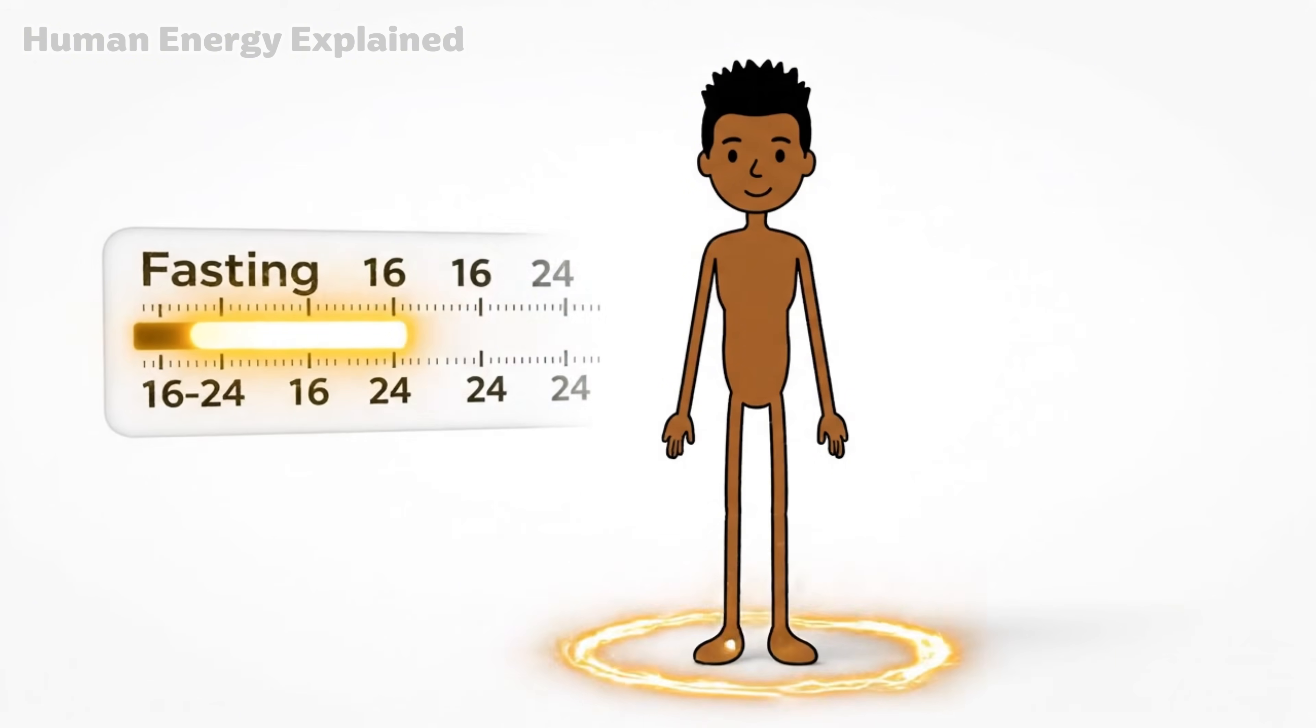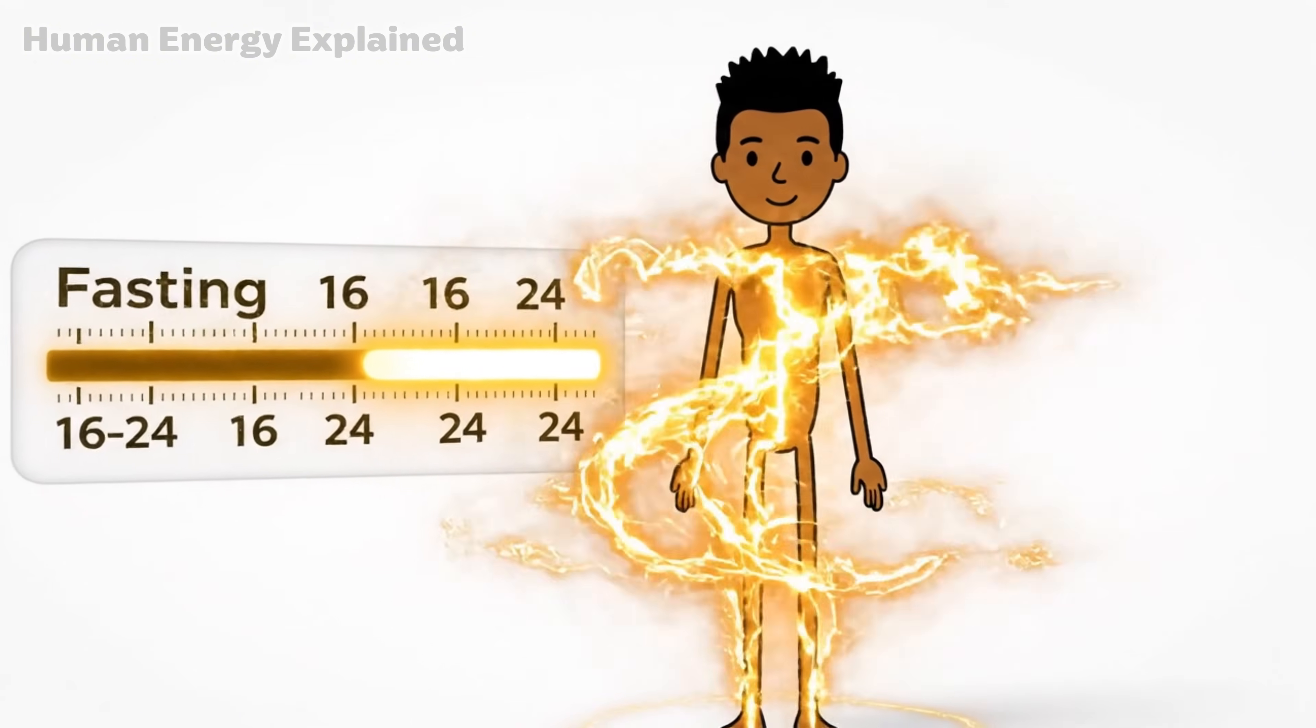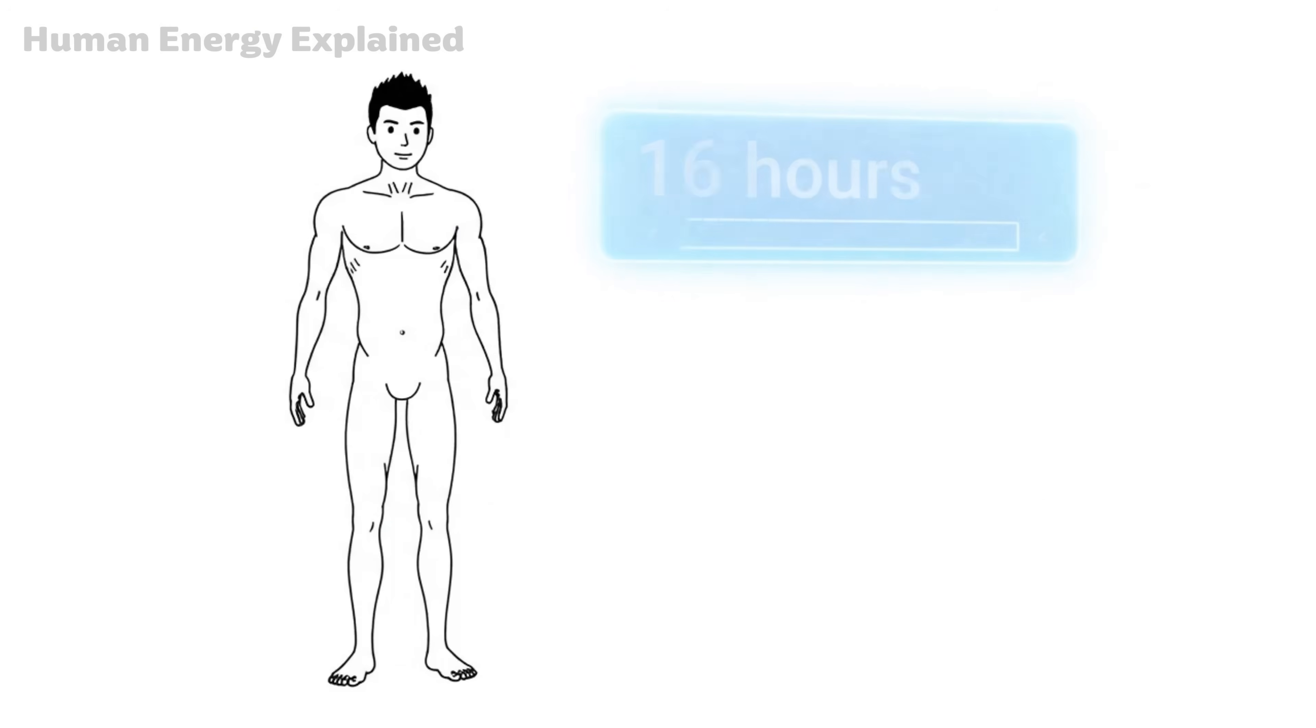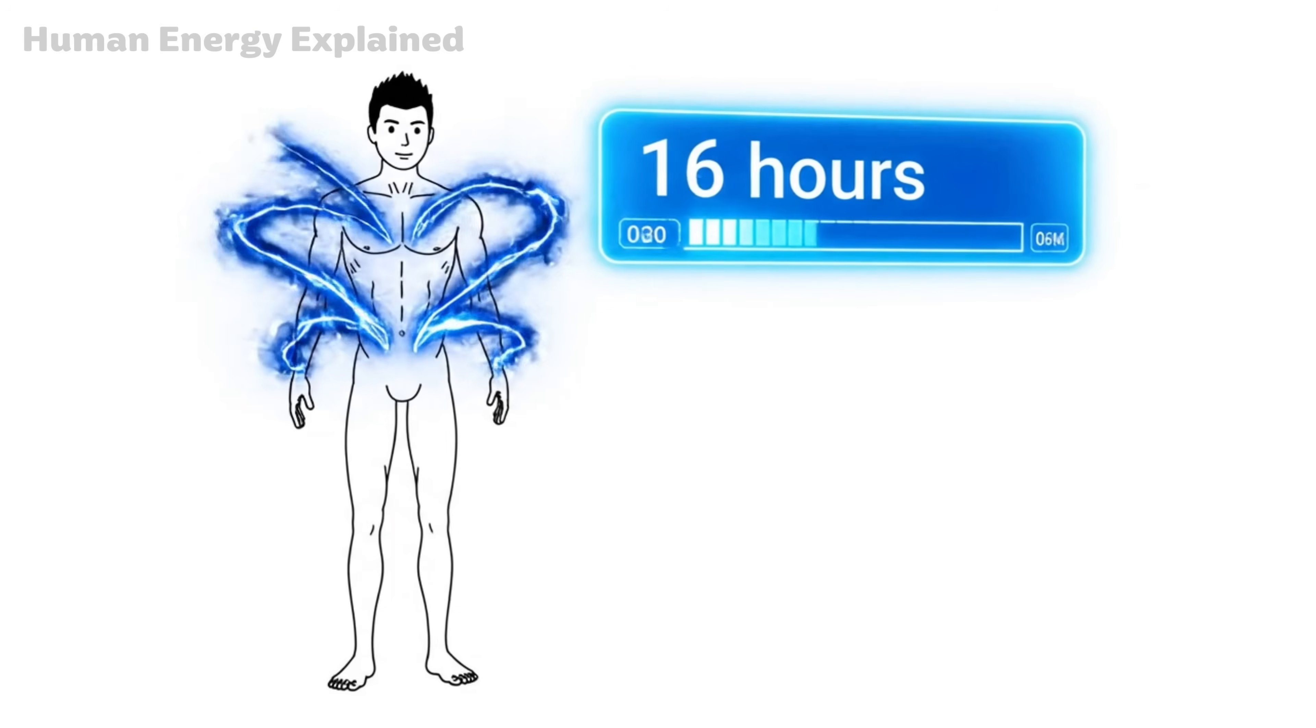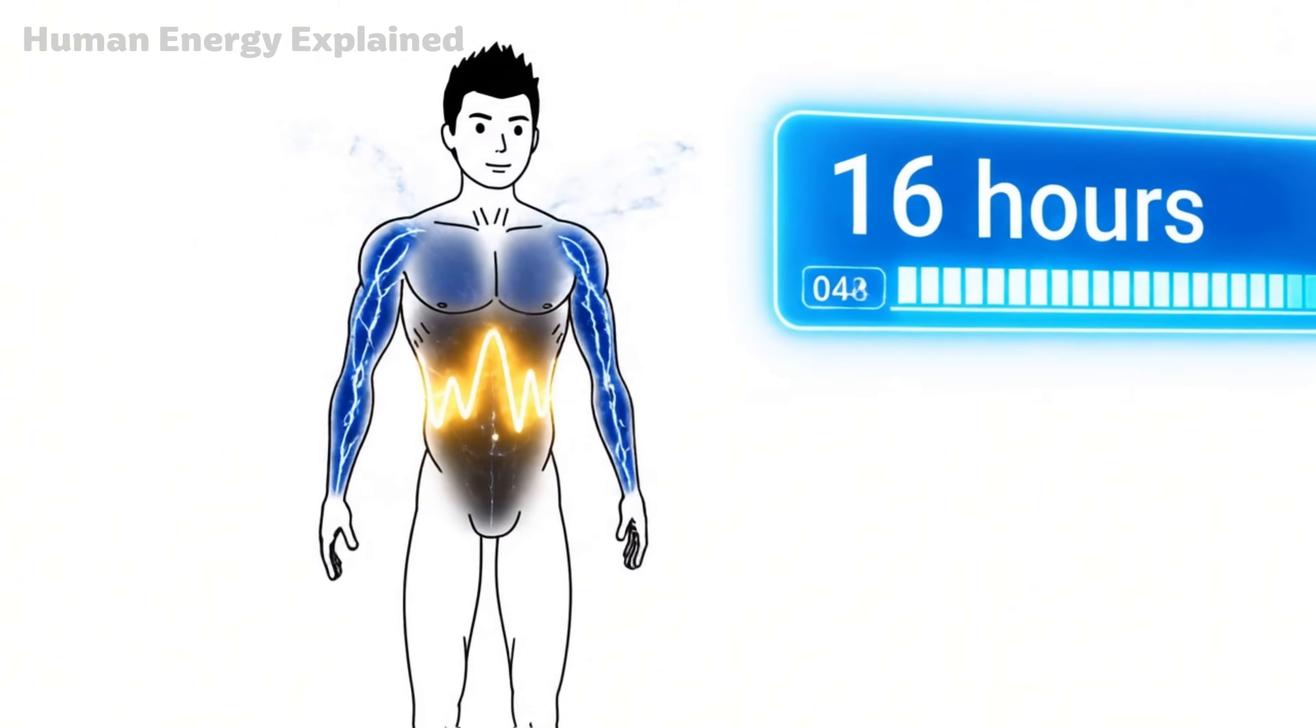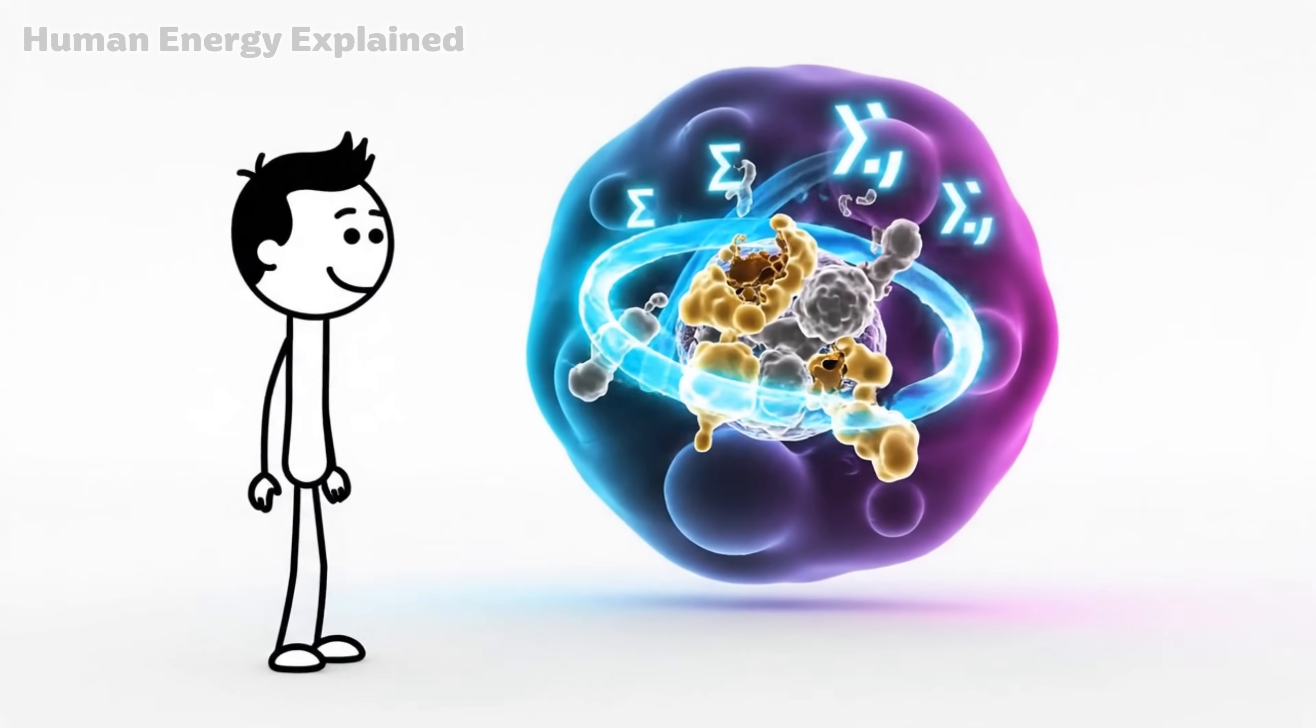Now, let's talk about what happens between hours 16 and 24, because this is where your body truly shows what it's capable of. By hour 16, you've entered full ketosis. Fat burning is in high gear. But something else activates, something your cells have been waiting to do.